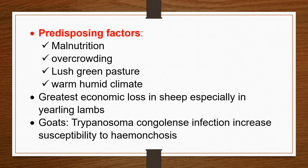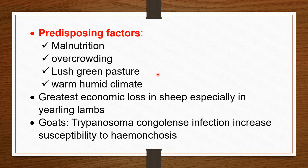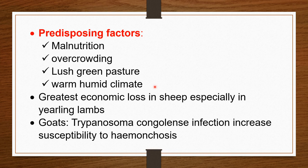Certain predisposing factors invite the disease. Malnutrition — if protein, fat, vitamins, and minerals are not proper — increases susceptibility. Overcrowding is a great stress to sheep and increases contact between animals, promoting disease spread. Less green pasture is favorable for both the sheep grazing and the parasite's protection. Warm, humid climate is also favorable for the parasite. These factors increase incidence and prevalence.